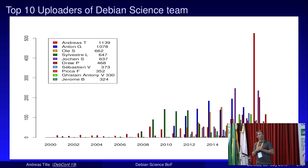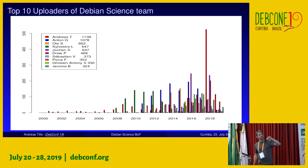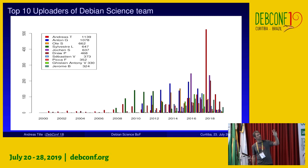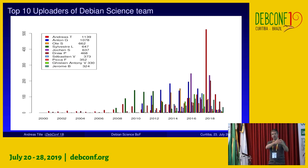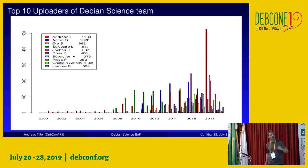Who is in the Debian Science team? These graphs are from team statistics done in a Google Summer of Code project I introduced in my last session here. It shows who is uploading packages maintained by the Debian Science team. I'm not really proud that I'm the most active uploader — I would love if way more other people were more active — but it shows that the team is growing and there are active people coming in and doing interesting work.